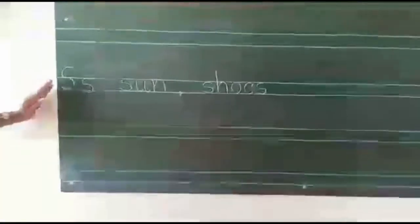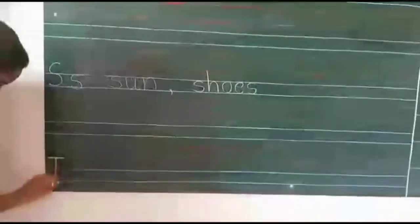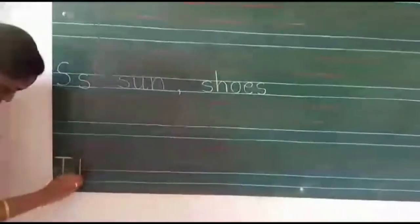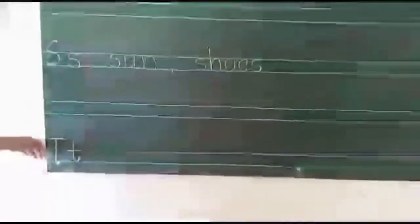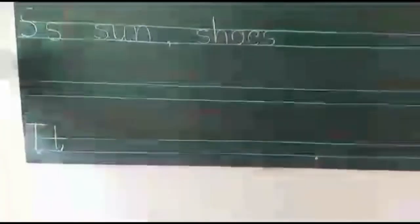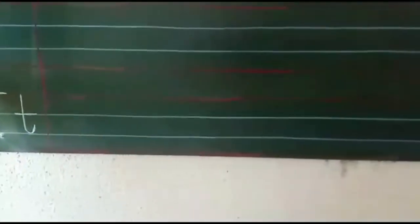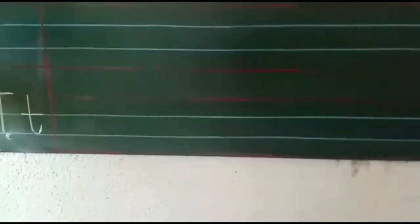Now, after S, leave a line then write capital letter T, script letter T. T for tiger, T for tub, T for tin, T for toes, T for table.